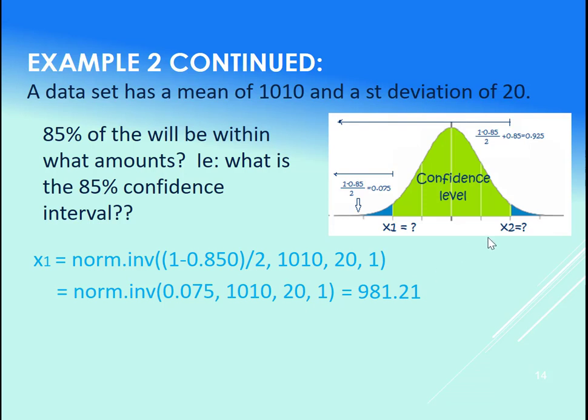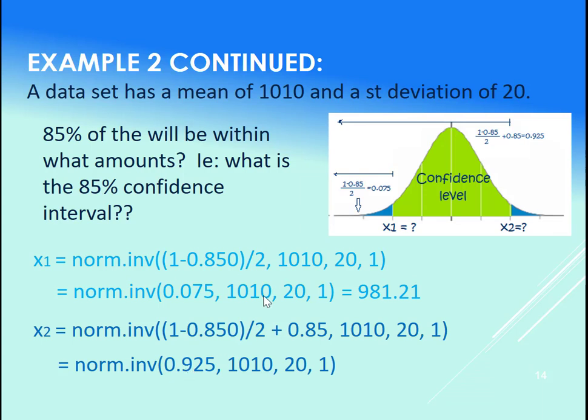And for the upper one here, again, you could do this whole calculation just as it is in the norm.inv call within it. Just be careful of your brackets. Or, you could just go, okay, I know that that area to the left of X2 here, this whole thing is 92.5%, so you could just plug that in instead. And that will actually give us 1,038.79, so let's go see about getting that in it.